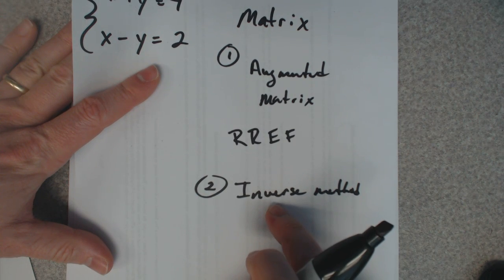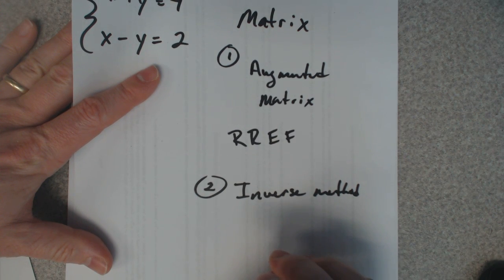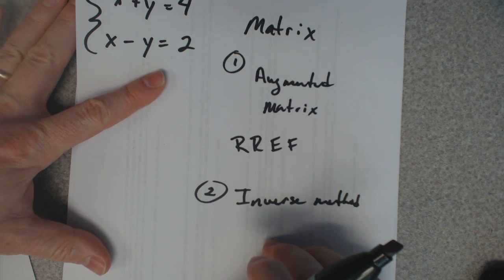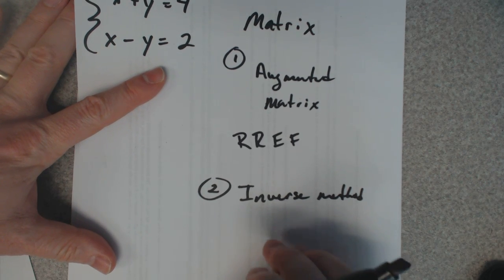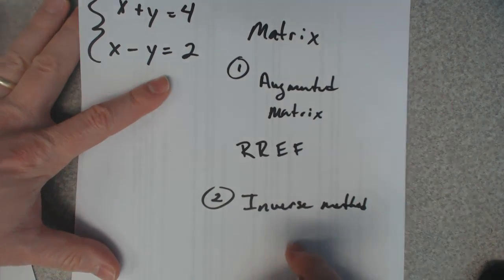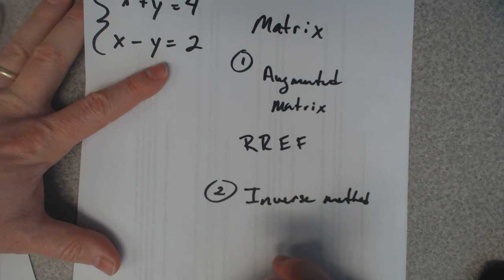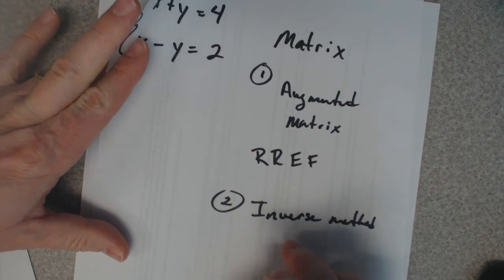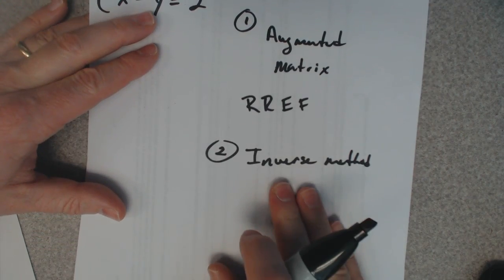It'll tell you if there is infinitely many or none, but it won't tell you which one. This one will tell you which one exactly. This one's kind of ambiguous if there is no solution or infinitely many. But let's look at this method right here.